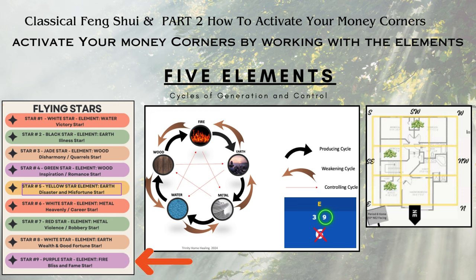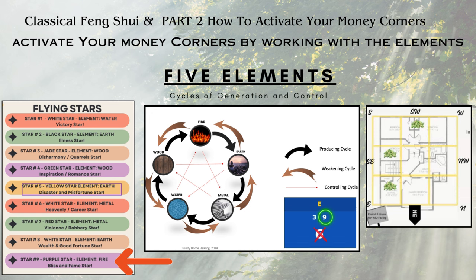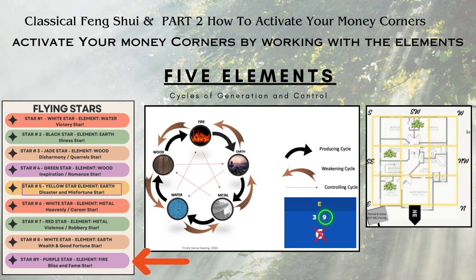So if we take a look at the five elements and the cycles, there's a producing cycle and a weakening cycle, as well as a controlling cycle. For example, fire produces earth, earth produces metal, metal produces water, water produces wood, and wood produces fire. That also goes around as weakening: fire weakens wood, wood weakens water, water weakens metal, metal weakens earth, and earth weakens fire.